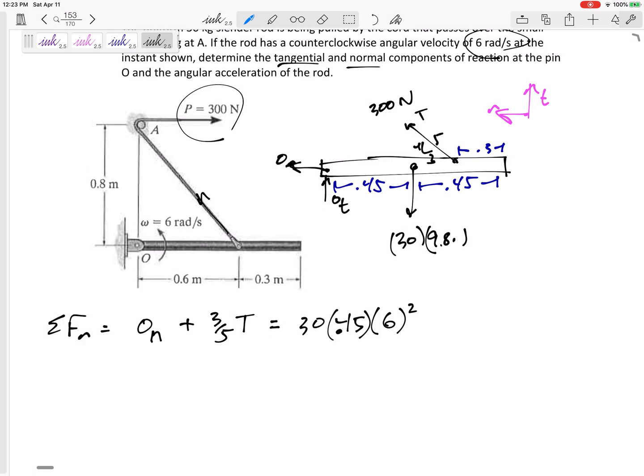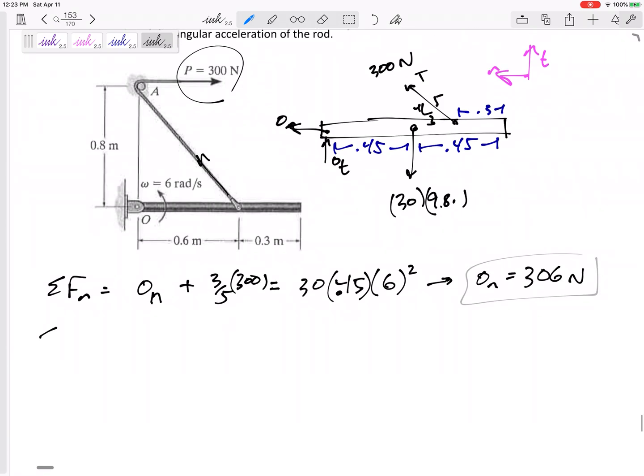I do know this tension was 300. So I could plug in 300. Only one unknown. I can solve O normal, 306 newtons. So that's one answer.